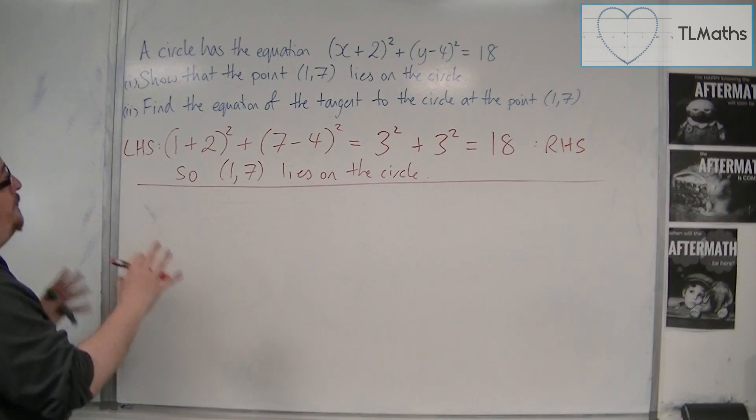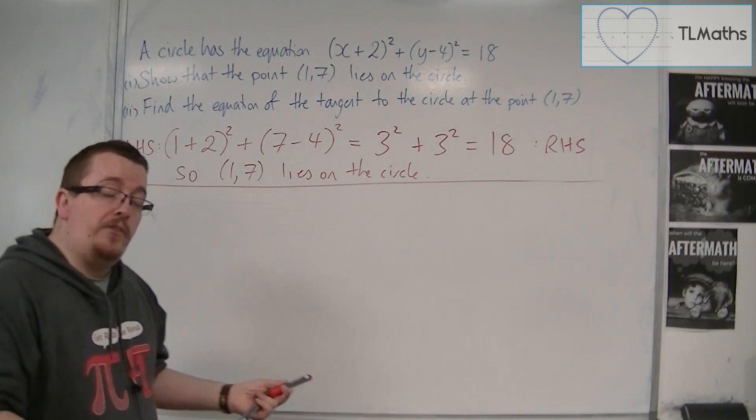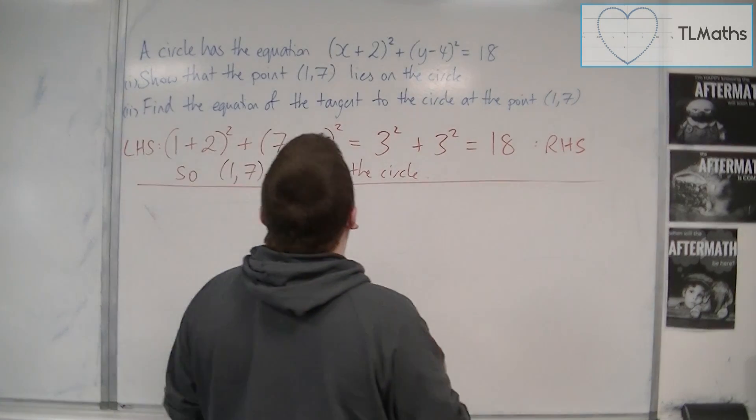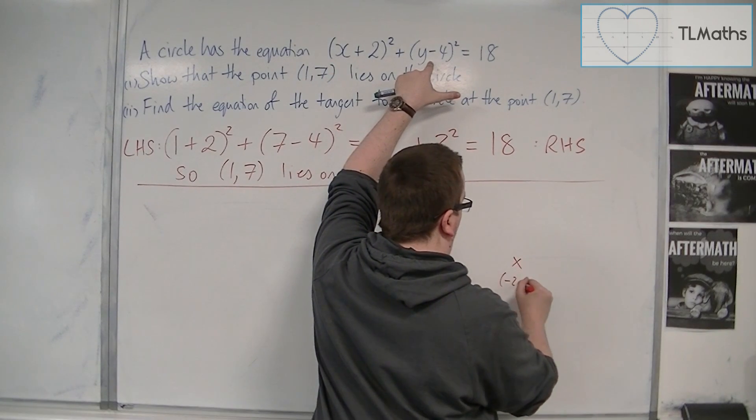Okay, so now we need to find the equation of the tangent to the circle at the point (1, 7). Now it would make sense to draw a little diagram at this point. We know that the centre of the circle is at (-2, 4), so there's (-2, 4).